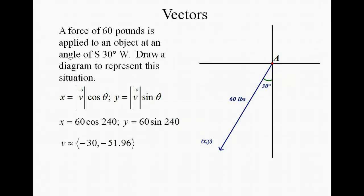And then we want to give our vector in component form as negative 30 and negative 51.96, just by plugging in 60 cosine 240 in your calculator and 60 sine 240 in your calculator for the y coordinate. And then again, you can rewrite that in your linear combination form.